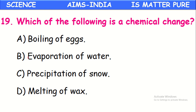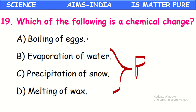Which of the following is a chemical change? Options: boiling of eggs, evaporation of water, precipitation of snow, melting of wax. A chemical change is one that cannot be reversed and involves formation of a new substance. For evaporation of water, precipitation of snow, and melting of wax, only a change of state occurs — no new substance is formed, so these are physical changes. Only boiling of an egg is a chemical change: it is irreversible — from a boiled egg we cannot get back the raw egg, and the chemical composition completely changes after boiling.